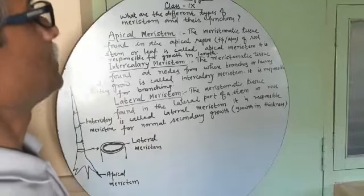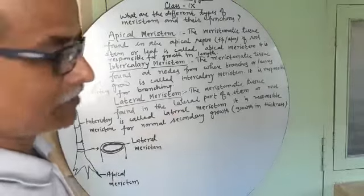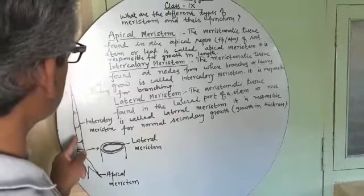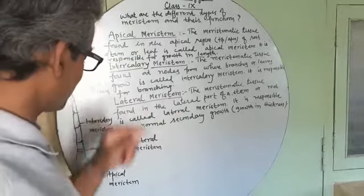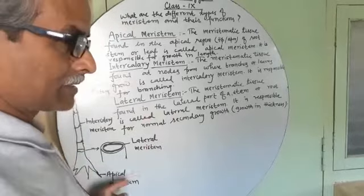Apical meristem is responsible for growth in length of shoot, stem, its branches, and that of root.